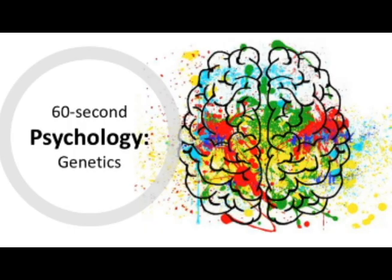Each gene contains information relating to physical and non-physical characteristics, such as hair colour and personality. These observable characteristics are called a phenotype. For example, the gene for brown hair is part of the genotype, however the observable characteristic of brown hair is the phenotype.